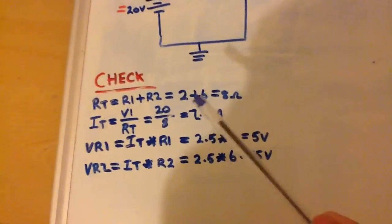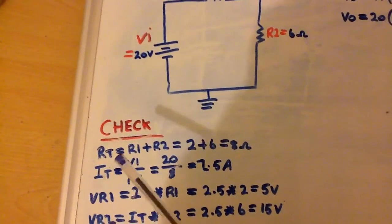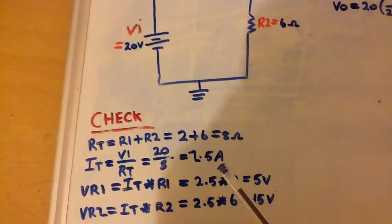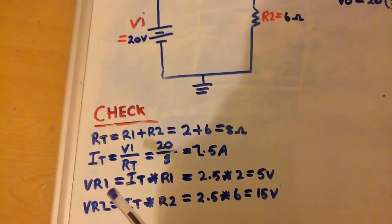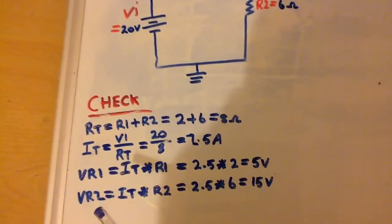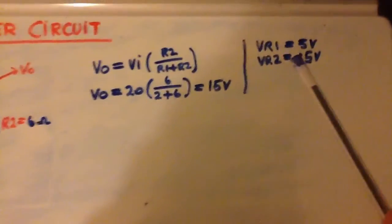So just to check on that, all you do is find the total resistance in our circuit, which is 8 ohms, and then find the total current, which is 2.5 amps. So the voltage drop across R1 is therefore 5 volts, and the voltage drop across R2 is therefore 15 volts. So that checks out.